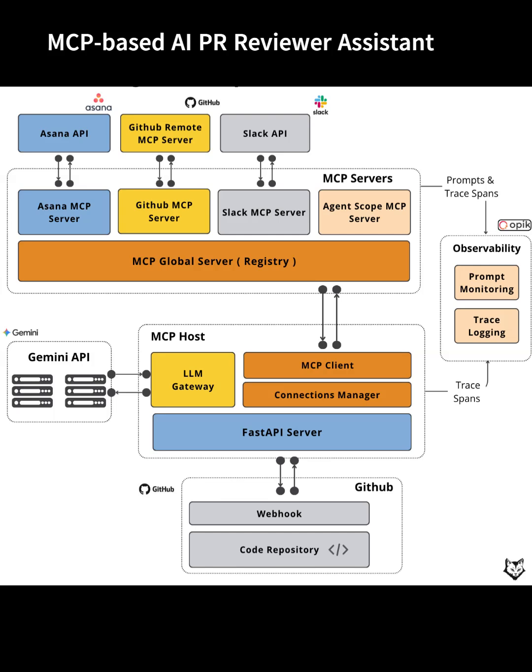Overview: Modern code review is challenging at scale, with PRs piling up and context lost across platforms like GitHub, Jira, Slack, and Asana. The MCP (multi-component protocol) architecture unifies these platforms, enabling automation that parses pull requests, gathers related task details, and posts summaries directly to Slack for team visibility.